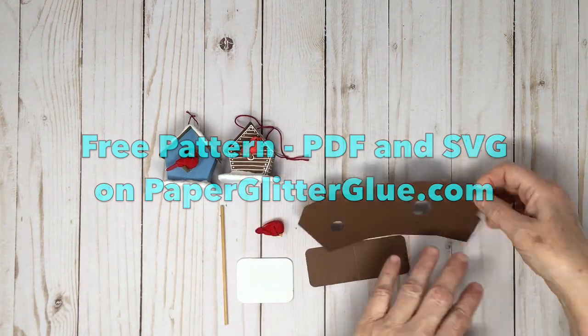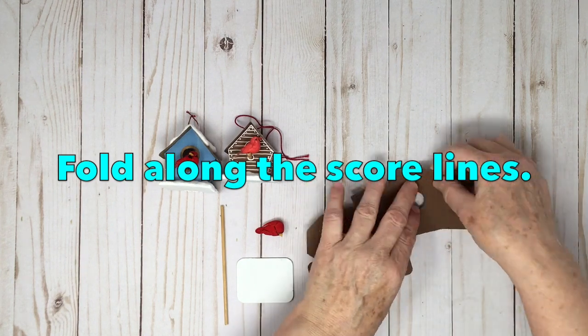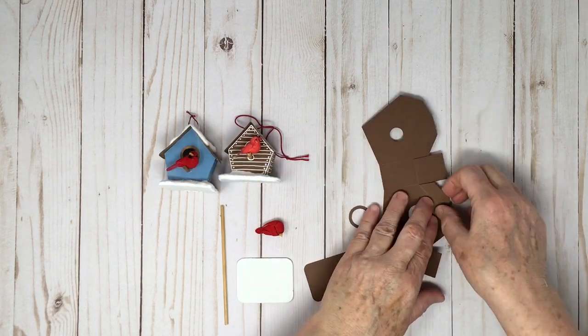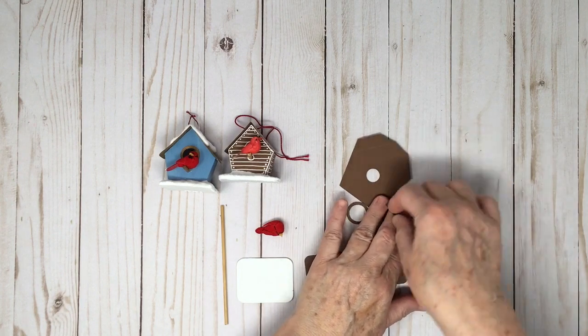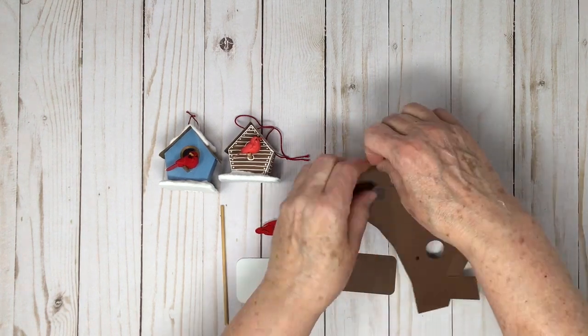Let me show you, first you have to fold along all the score lines. The score lines are on the pattern already, so just kind of fold so you know where all the score lines are.